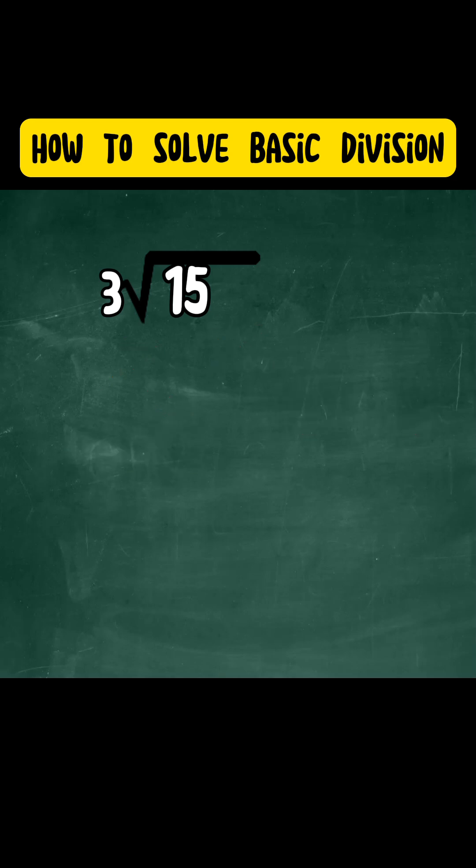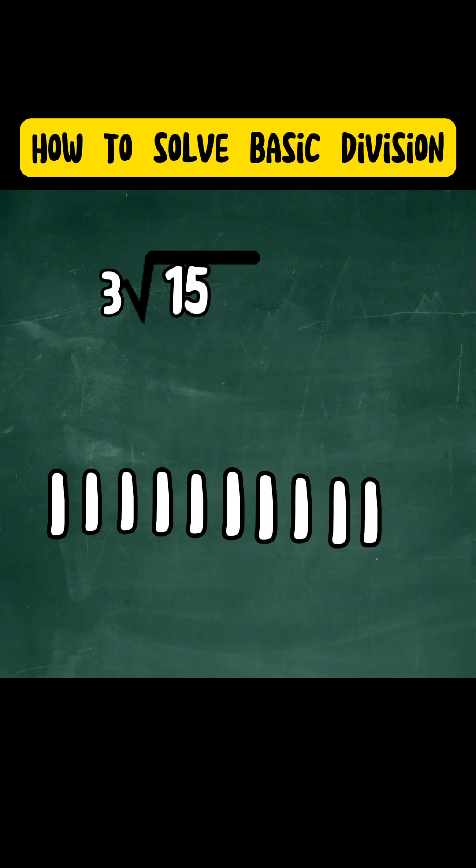So we count how many times 3 can go into 15 without exceeding it. We start counting 1, 2, 3, 4, 5, 6, 7, 8, 9, 10, 11, 12, 13, 14, 15.